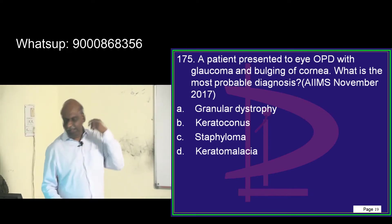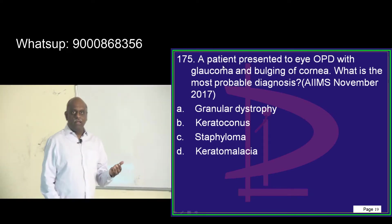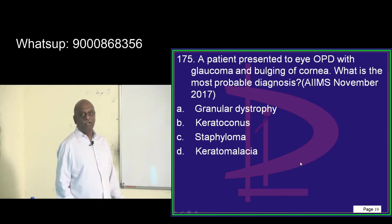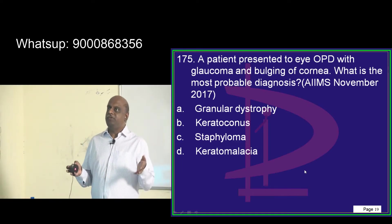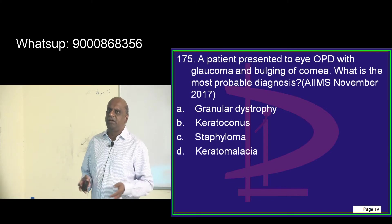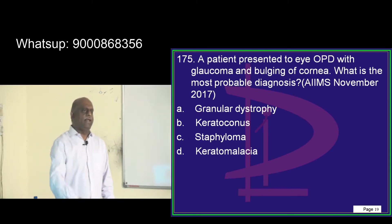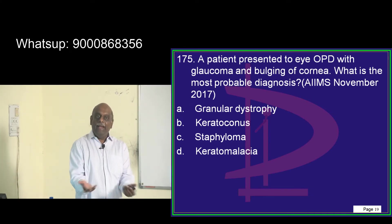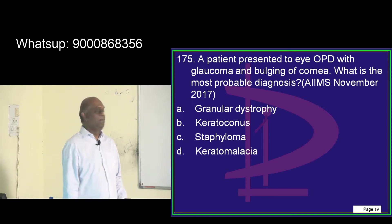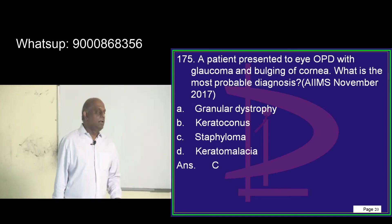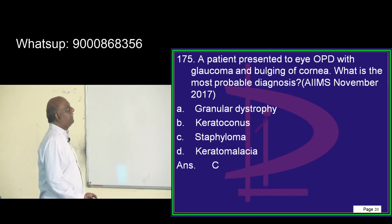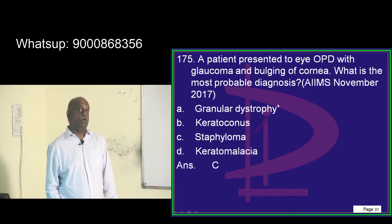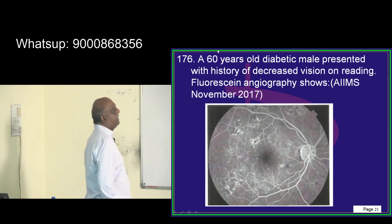A patient presents with glaucoma and a bulging cornea — what is the most likely cause? In PGI last 15 years of ophthalmology papers, examiners invariably ask one question on diabetic retinopathy, one on keratoconus, and one on herpes simplex. You need to be doubly sure about keratoconus, staphyloma, and keratomalacia. A glaucoma with bulging of the cornea as a complication — that is where you need to reach your conclusion.